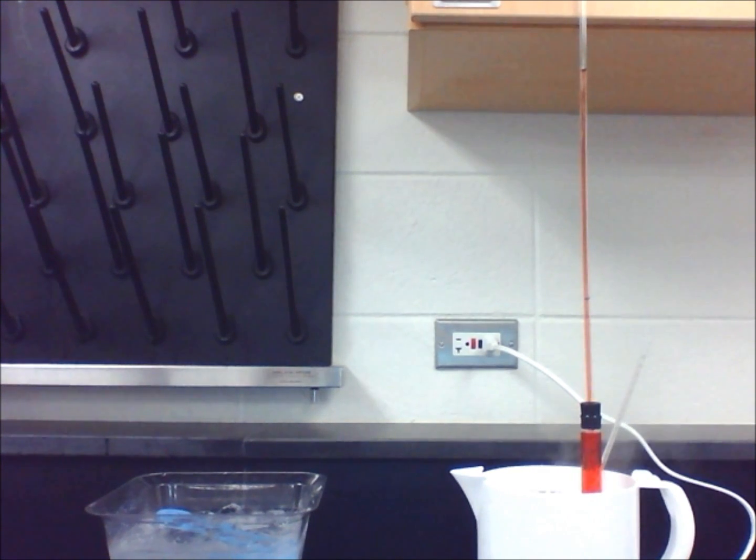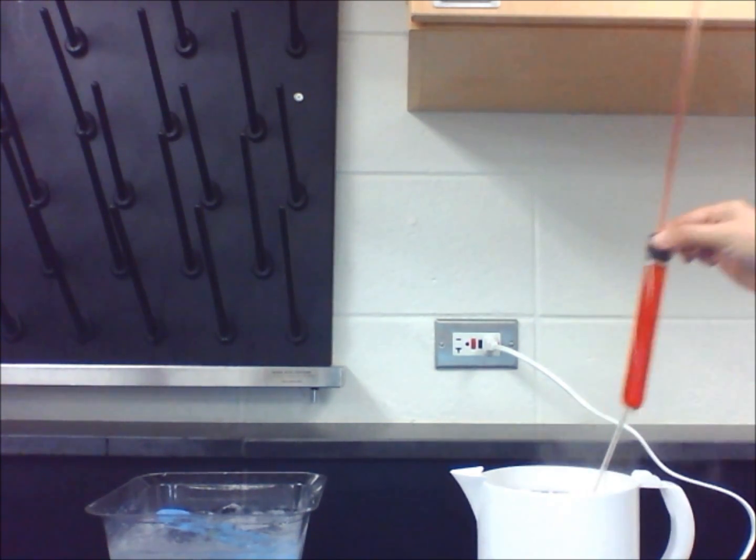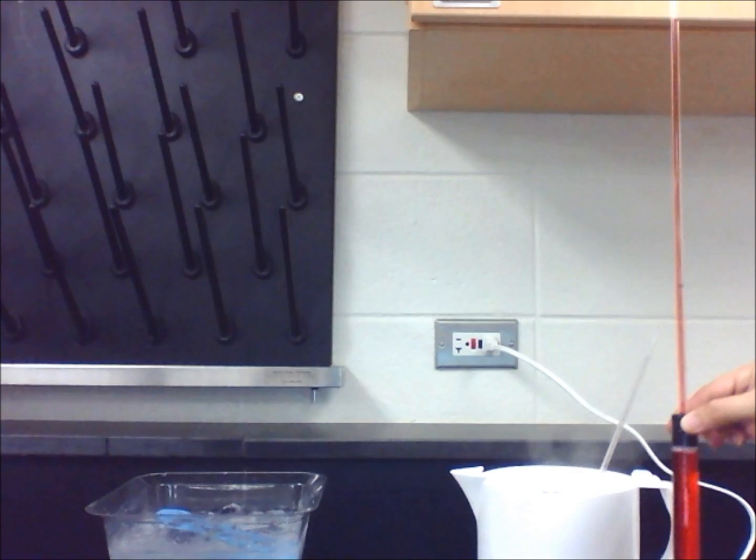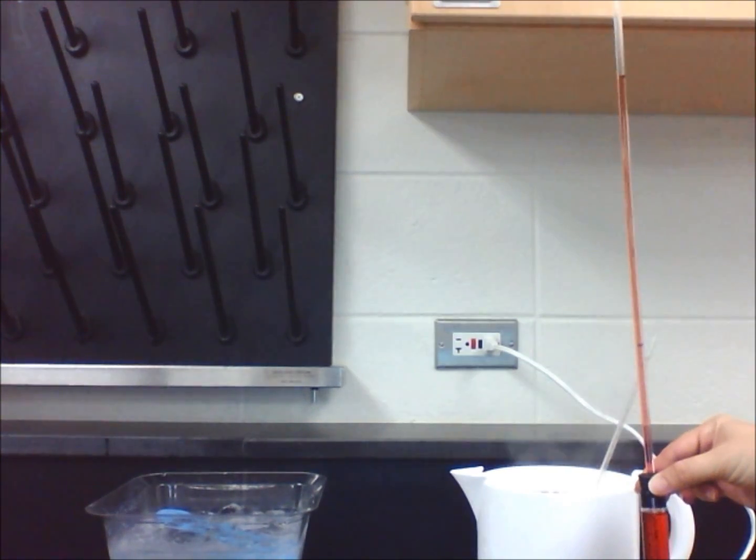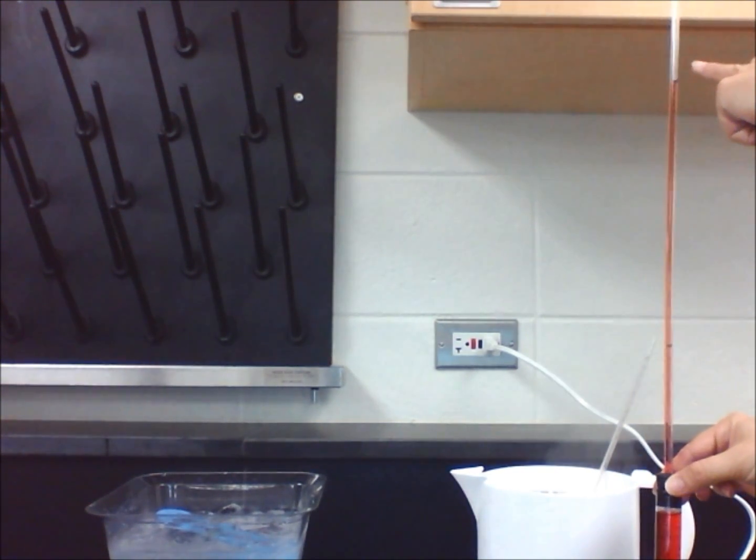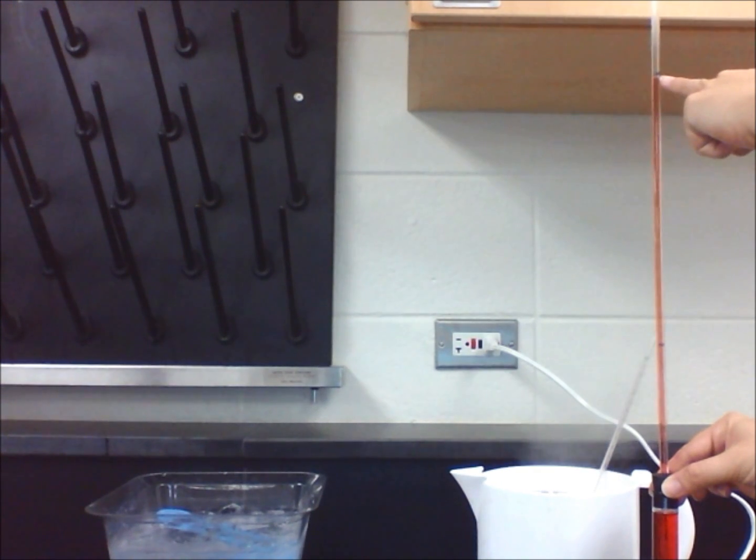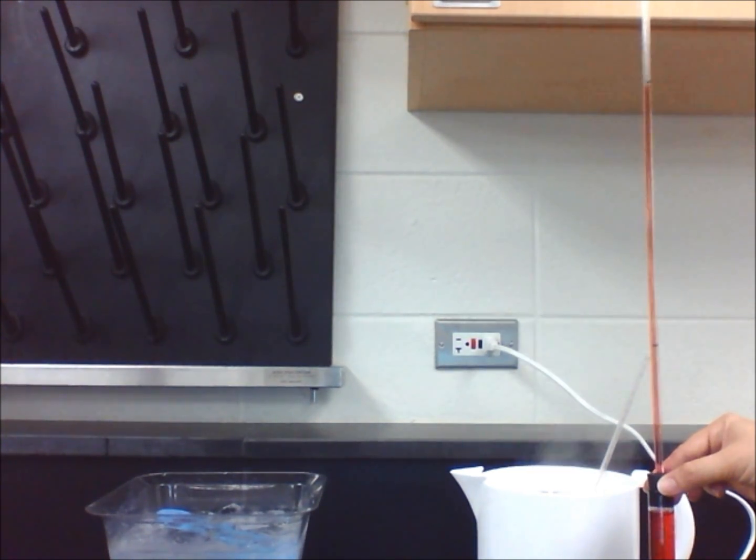Heat makes the volume of water rise or expand, therefore making it less dense as the molecules spread out. You will notice that the moment we take the liquid thermometer out of the hot water bath, the liquid inside the test tube cools. The volume of water decreases or contracts, making it more dense as the molecules become closely packed together.